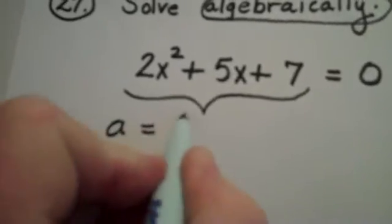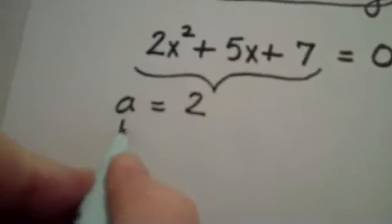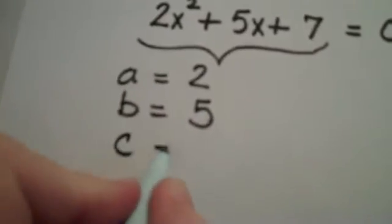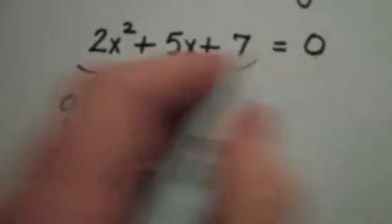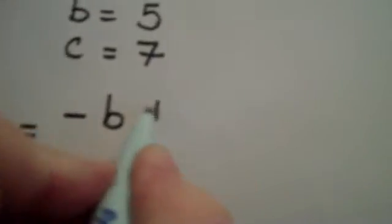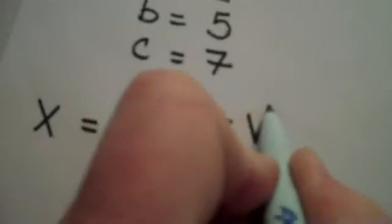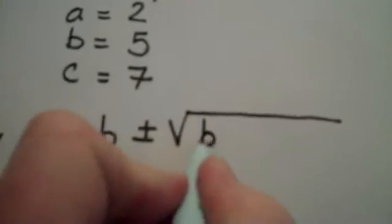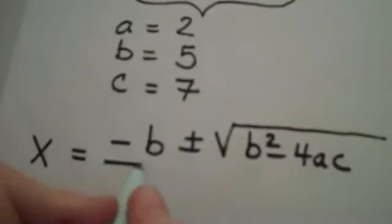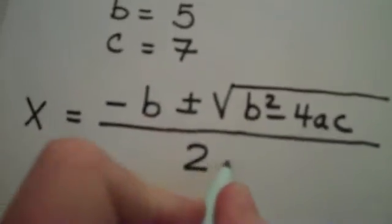A is 2 — the leading coefficient is 2. The coefficient of the middle term is 5, and the constant term is 7. Once it's in standard form, which it was, you can determine A, B, and C. Remember the quadratic formula: X is equal to the opposite of B, plus or minus the square root of B squared minus 4AC, all over 2A.